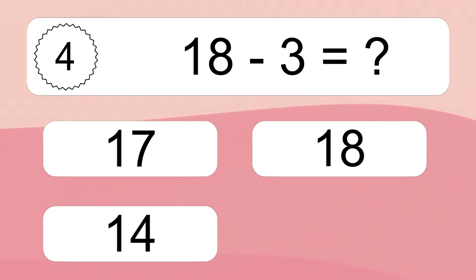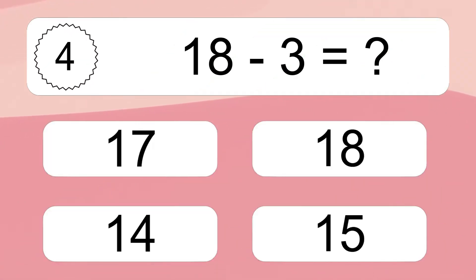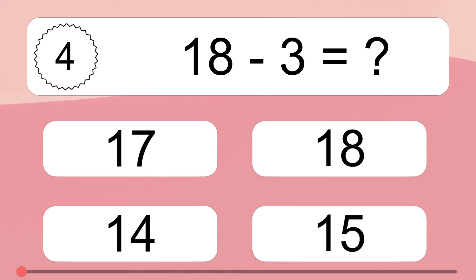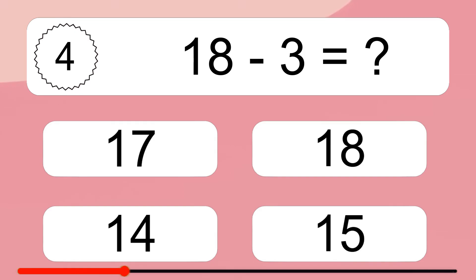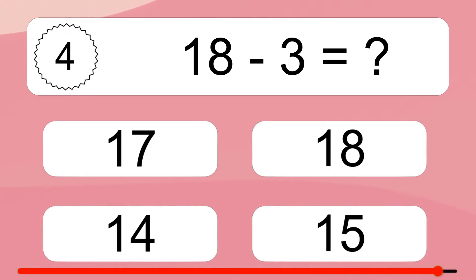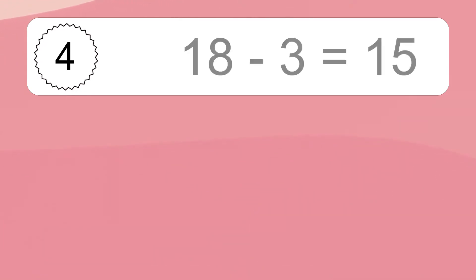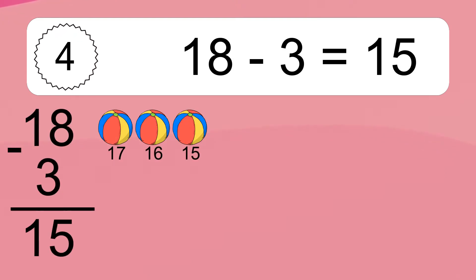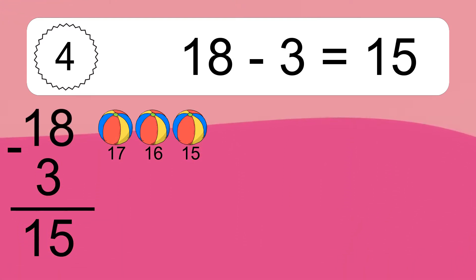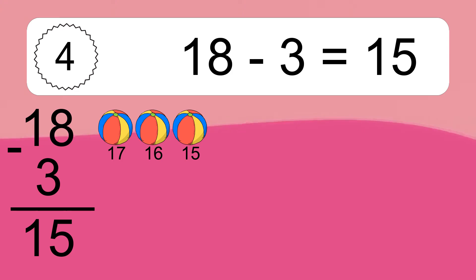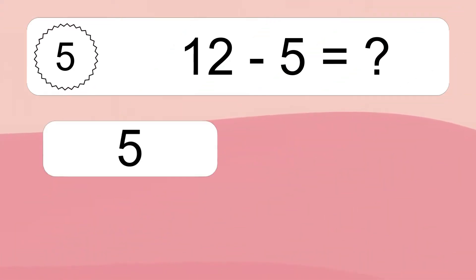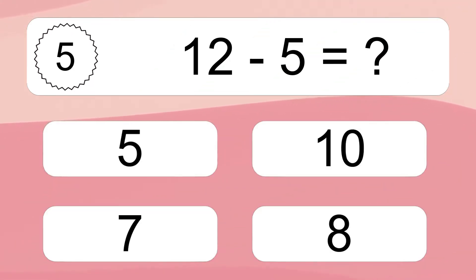18 minus 3 equals what? 18 minus 3 equals 15. Let's count it: 17, 16, 15.